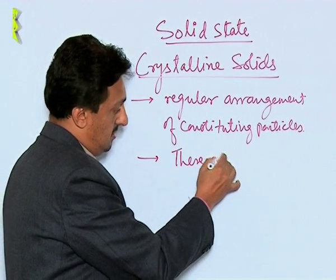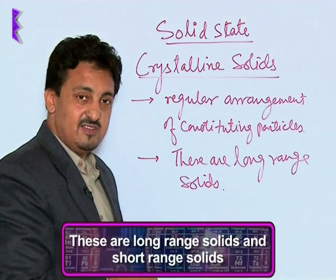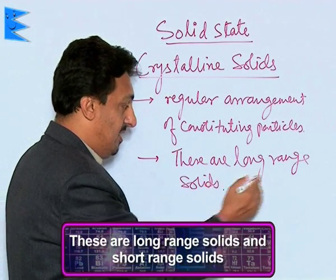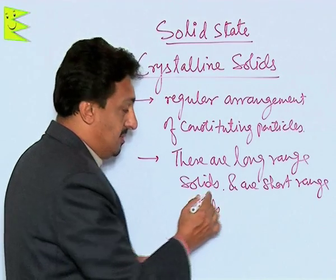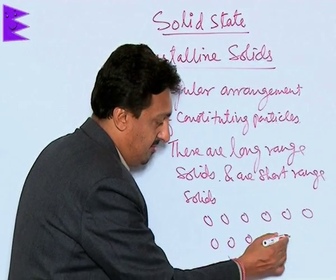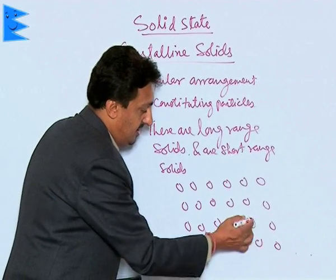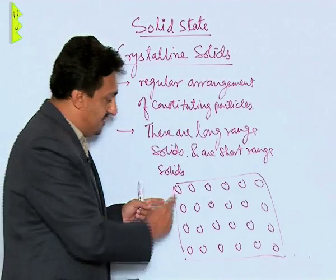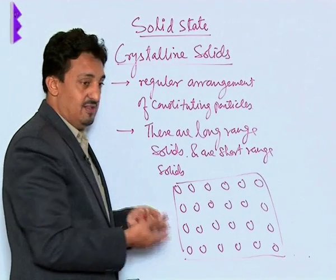These are long range solids, meaning whatever pattern the constituting particles take is repeated for long distances. However, some patterns are repeated only for short distances, making them short range solids. To illustrate, if these are the constituting particles arranged in a regular fixed pattern, such solids are called crystalline solids — long range, but also potentially short range.